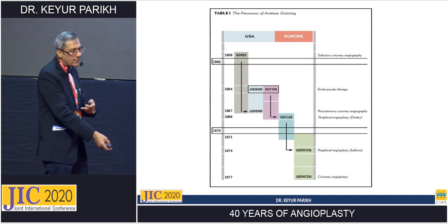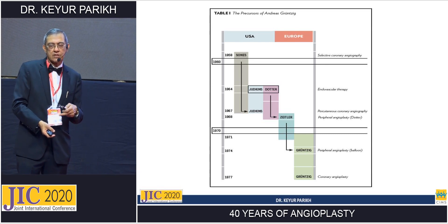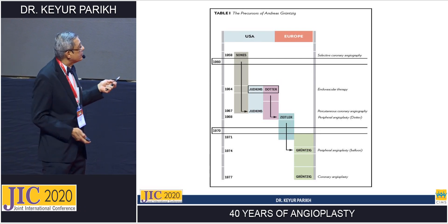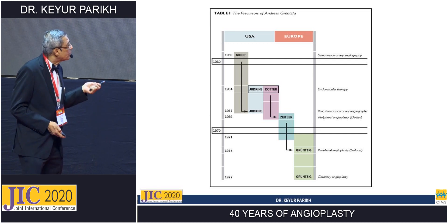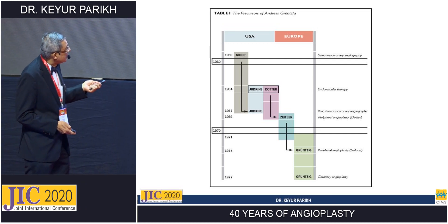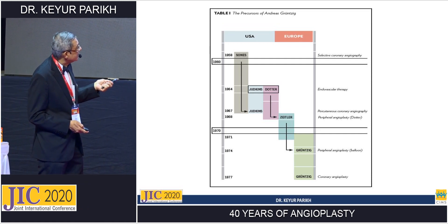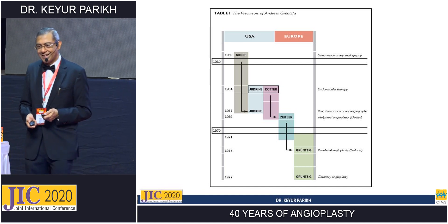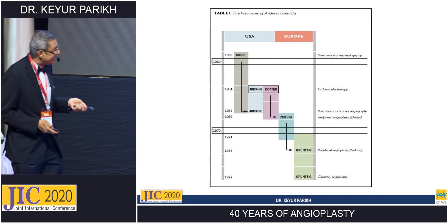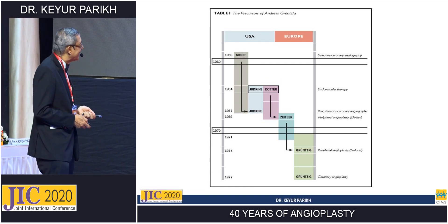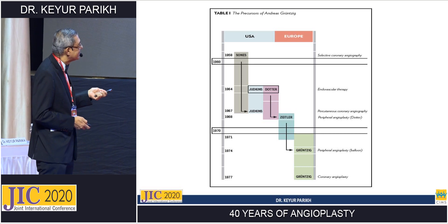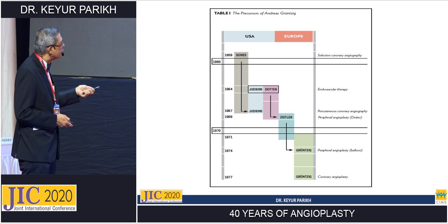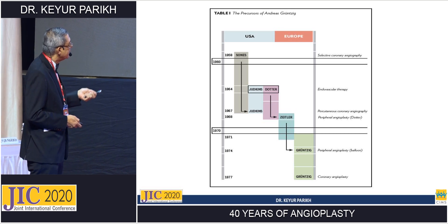If you think about radial access today, well before that, brachial access was started by Sones in 1958. There are two landmark events that happened that year: Sones started doing angiography in 1958 in Cleveland, and I was born in Dar es Salaam, Tanzania in 1958 — so that was the other landmark event. Then Judkins developed the femoral access in the 70s and it was used routinely in the 80s.